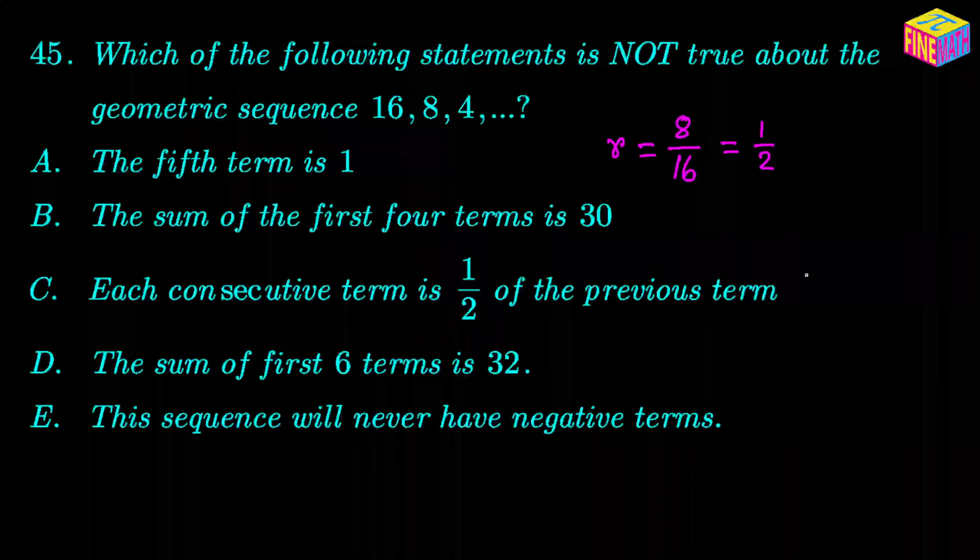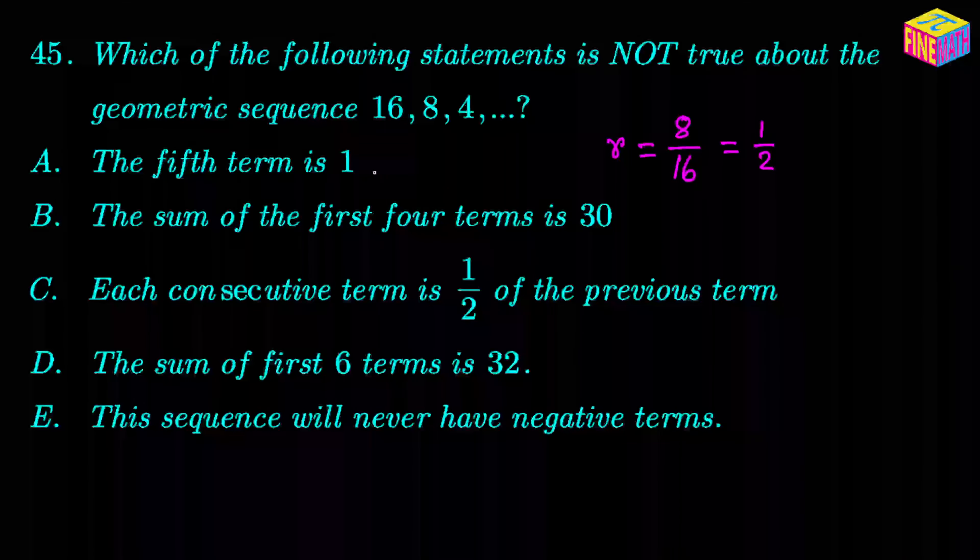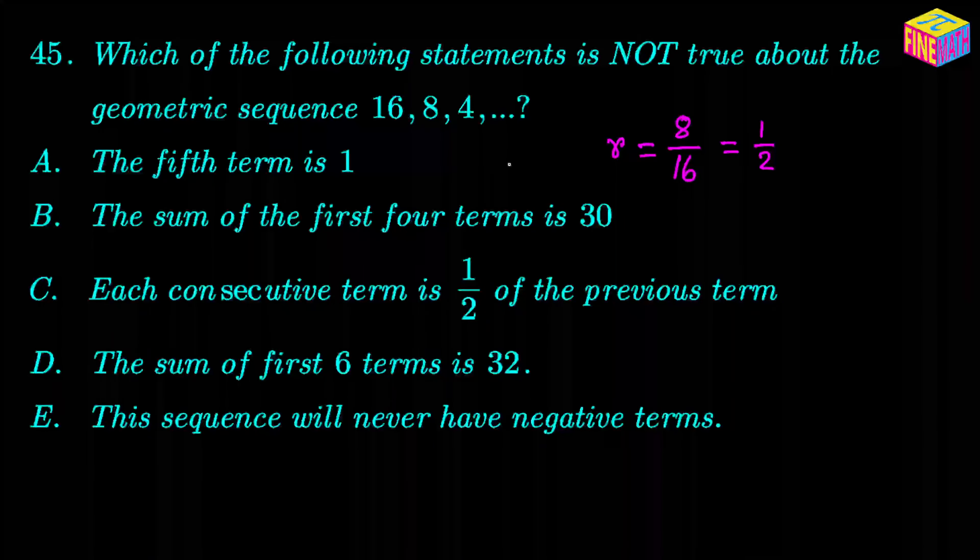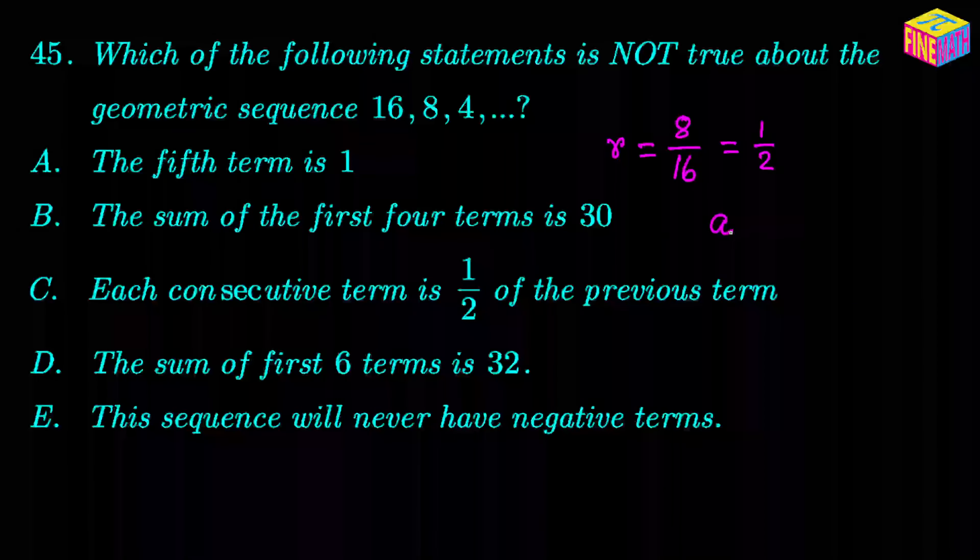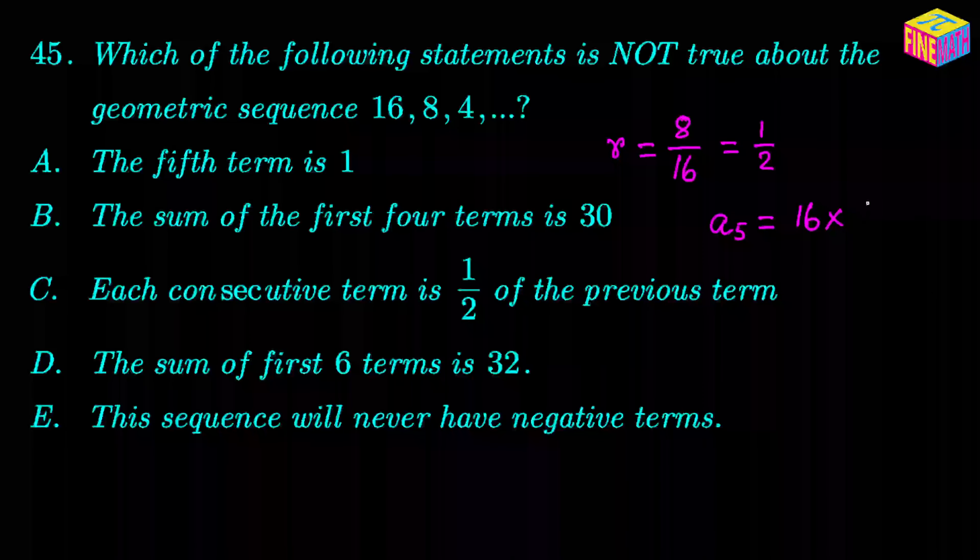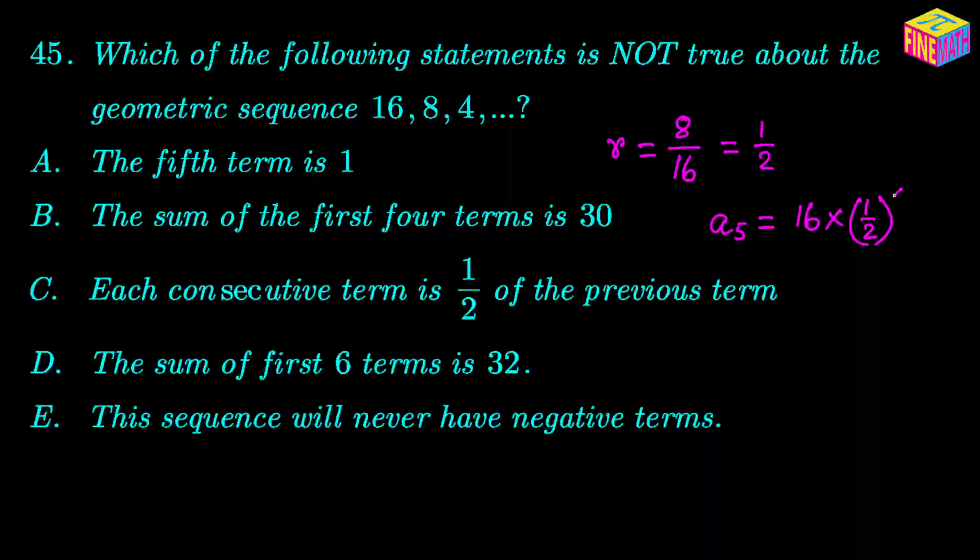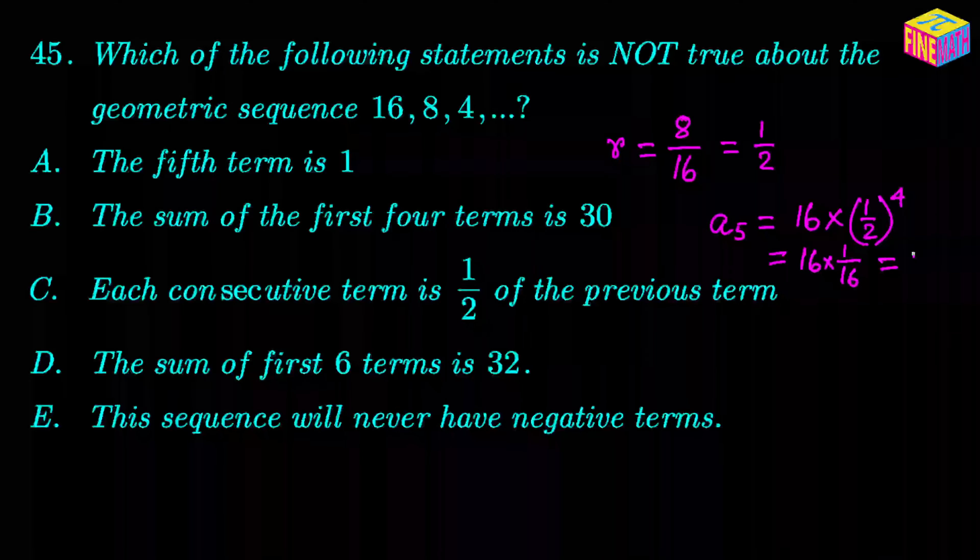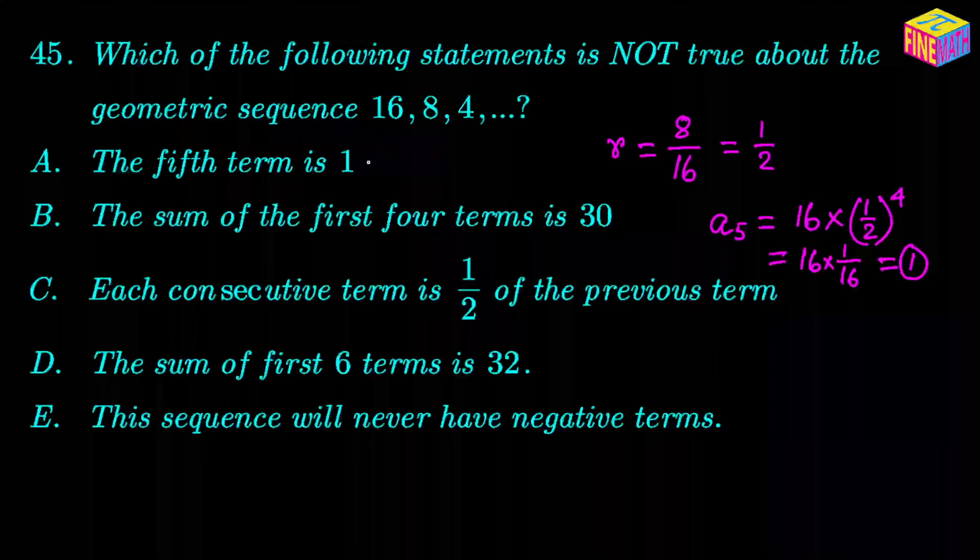Now let's look at the answer options and see which ones are true and which one is false. So first let's evaluate the first option: the fifth term is 1. Well, what would be the fifth term? a sub 5 would be the first term which is 16 times the common ratio to the power 5 minus 1, that is 4. So that would be 16 times 1 over 16 and that equals 1. So actually the fifth term of this geometric sequence is 1. The first statement is correct.